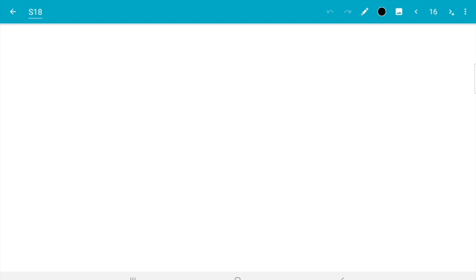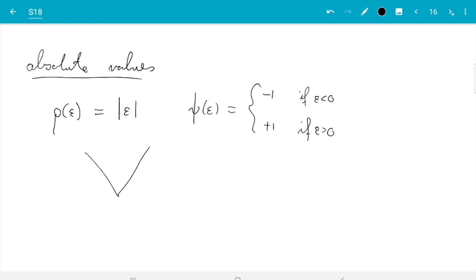Let's do absolute values as the next example. We have seen that as a numerical example in the first subsection. So there we have ρ of ε is absolute value of ε, and then ψ of ε, technically this function is not differentiable because it has this break at 0, but if we ignore that then we know the function goes down for negative values and up for positive values. So we have minus 1 if ε is smaller than 0 and plus 1 if ε is bigger than 0.